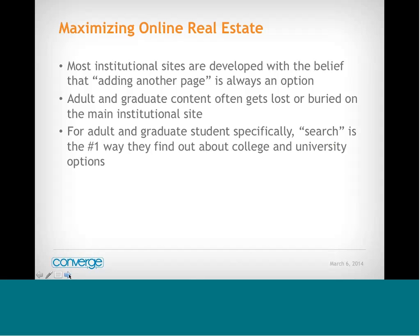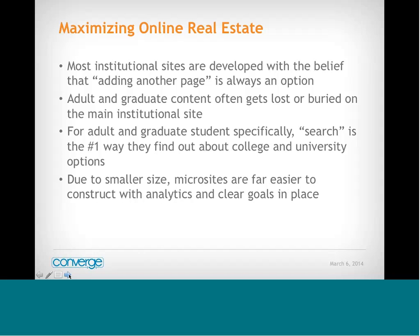Having things scattered all over dramatically increases your odds of losing your prospective student. For adult and graduate students specifically, search is the number one way they find out about colleges. A 15 or 16-year-old develops a mental shortlist and goes straight to a specific institution. For adult and graduate students, unless you're truly an elite program, a lot of your consumers are going to do much broader searches — 'MBA online' — and see who shows up. By having a really honed microsite that's well optimized, you have the ability to show up aggressively there even in highly competitive markets.